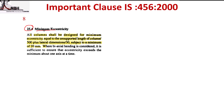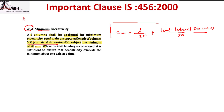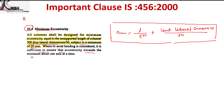Clause 25.4 states that all columns shall be designed for a minimum eccentricity. The minimum eccentricity is given by the formula: e_min = (unsupported length of column / 500) + (least lateral dimension / 30), subject to a minimum of 20 mm. Additionally, where biaxial bending is considered, it is sufficient to ensure that the eccentricity exceeds the minimum about one axis at a time.